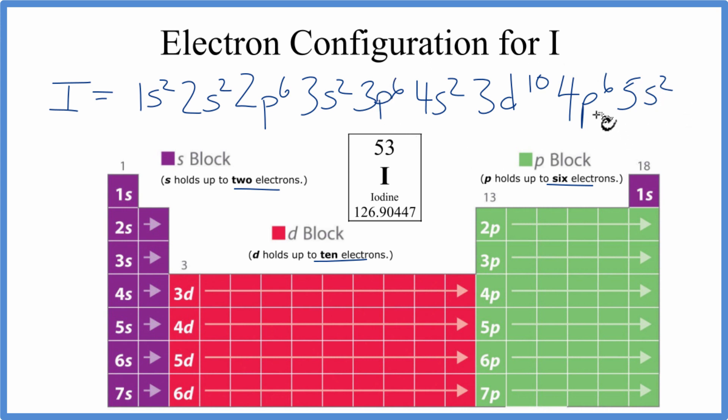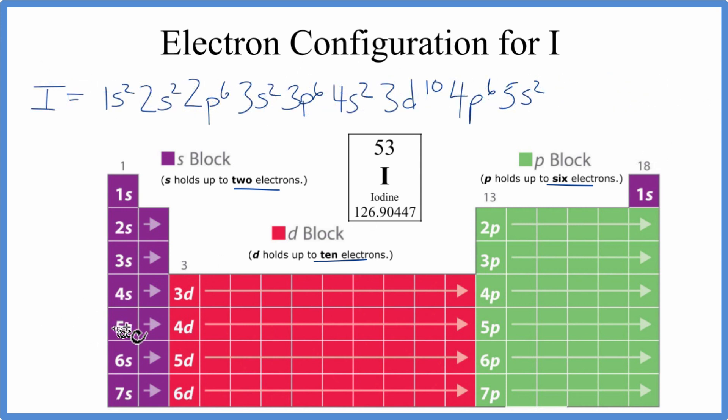Let's shrink this down and give ourselves some more room. 5s2, then 4d. Now we've used 48, 4d10. And then finally, we can put 5p and we only need 5 more. 48 plus 5 gives us 53.